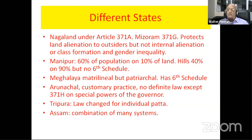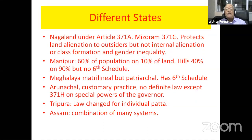Nagaland and Mizoram are governed by Article 371A or 371G — in other words, they come under customary law. No central law is valid until recognized by the legislatures of these states. For example, Nagaland never recognized the Land Acquisition Act, so all acquisition had to be through negotiations with the community — with fewer negative results than elsewhere. In Manipur, 60% of the non-tribal population lives on 10% of the land; the hills form 90% of the land and 40% of the population, but Manipur does not have the Sixth Schedule, and the special law for hill land does not really protect their land — an ongoing source of conflicts.